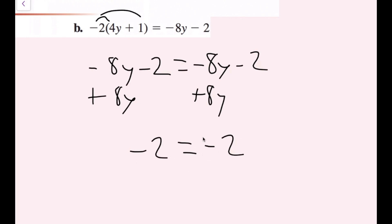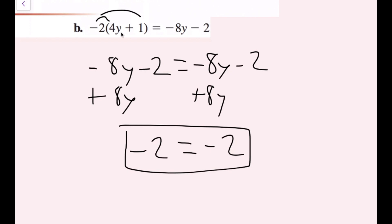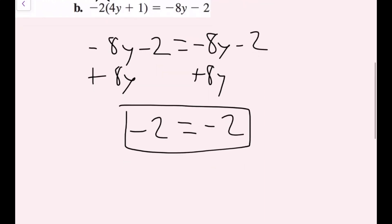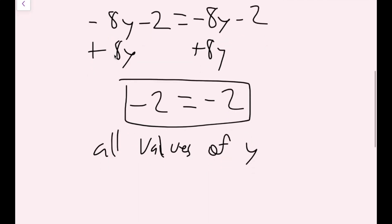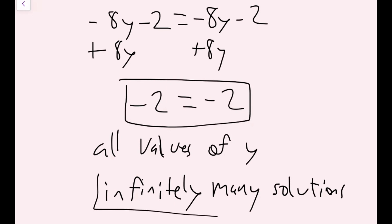I'm solving for y, but there's no y left. What this means is the original equation is true when negative 2 equals negative 2 — and negative 2 always equals negative 2. So this is always true, meaning every value of y works. This is an infinitely-many-solutions case. You can write 'y equals all real numbers' or 'all values of y.' If asked for the number of solutions, you say infinitely many.